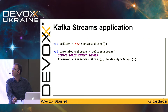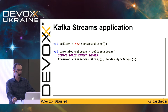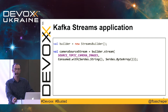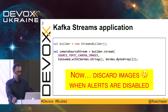From the StreamsBuilder you say stream(), give it the topic name, and tell it how to convert the key and the value. For an image, the key is a String — which will contain the name of the image on the file system. The value of the image is a byte array, basically just a set of bytes containing the image.